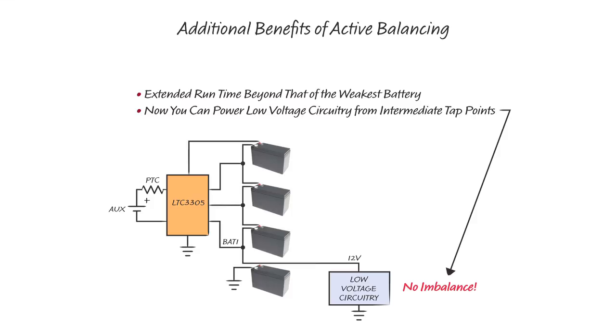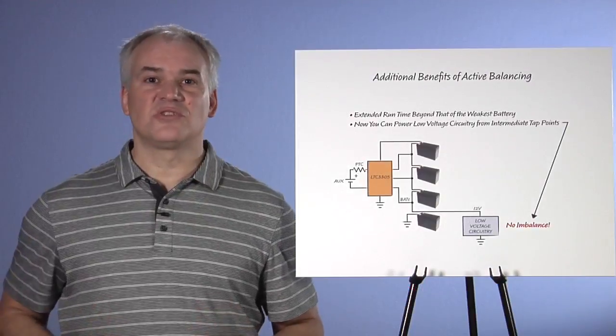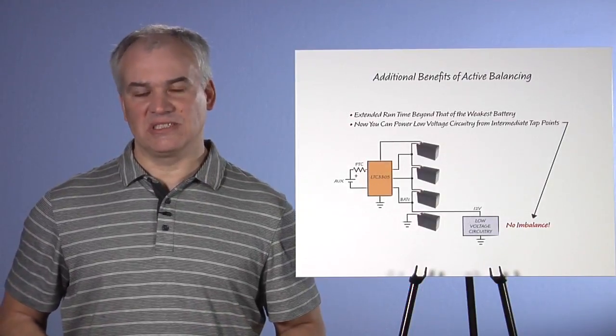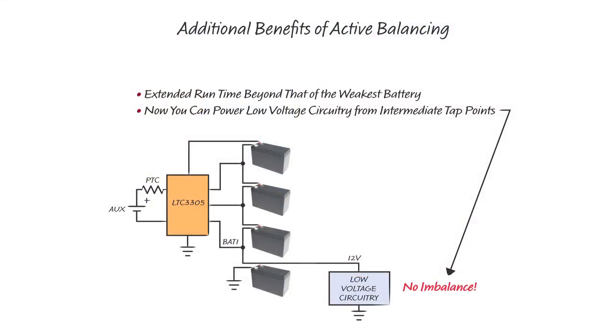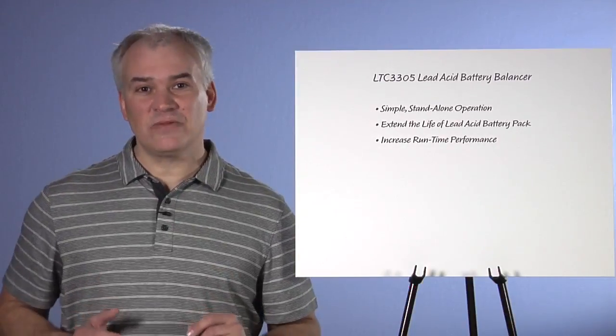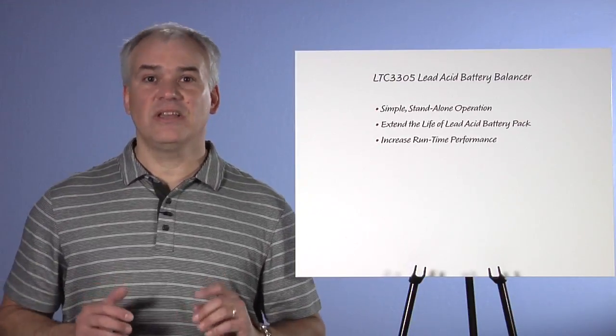There are additional benefits which active balancing provides beyond just extending the life of your battery pack. For example, since stack capacity is normally limited to that of the weakest battery, active balancing extends run time by delivering charge to that weakest battery during stack discharge. This is true for all battery chemistries, including lead acid. Another benefit is that you can now tap off the BAT1 node to power low voltage circuitry without fear of creating an imbalance. This is something you would never think of doing without balancing.